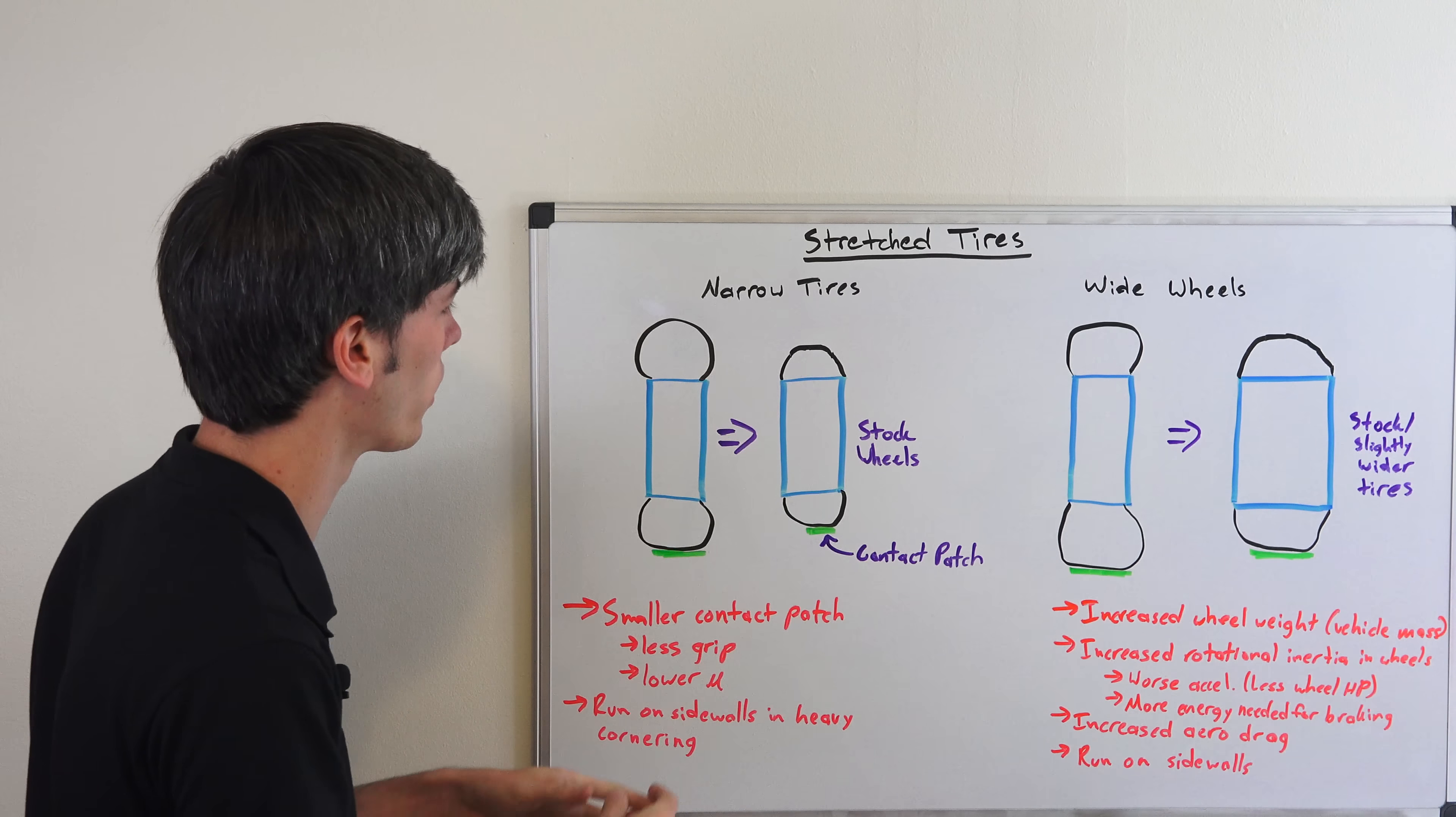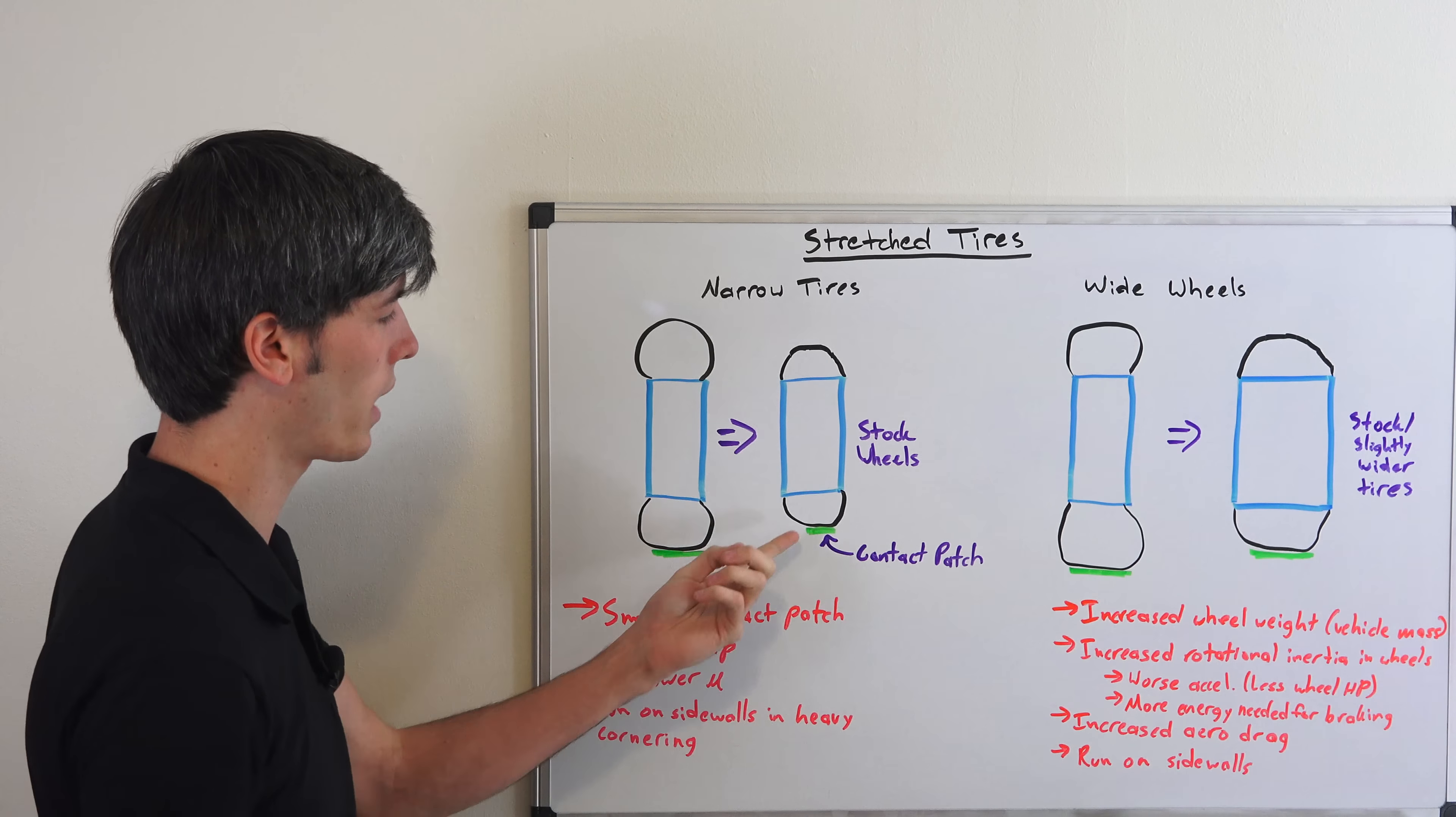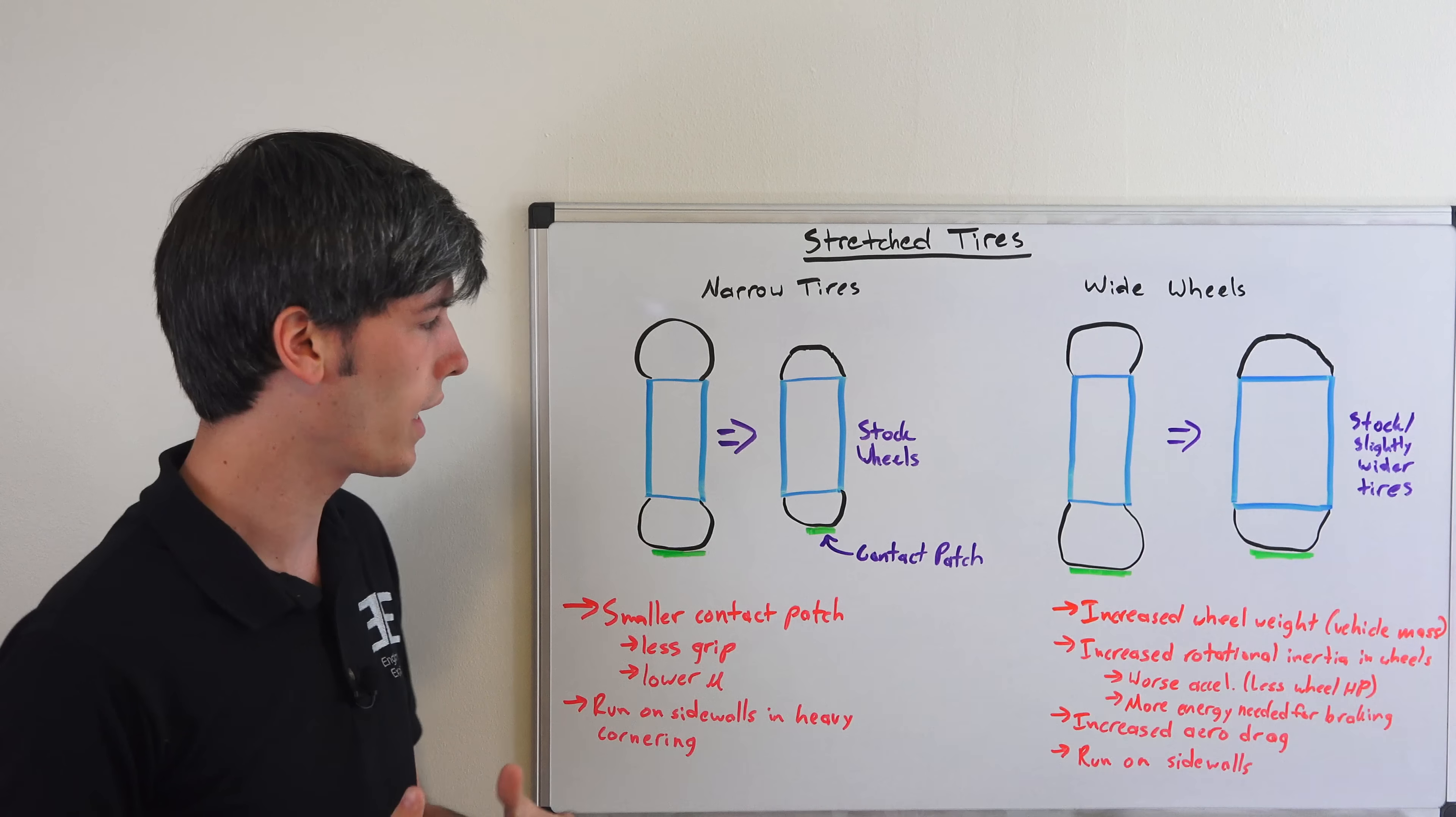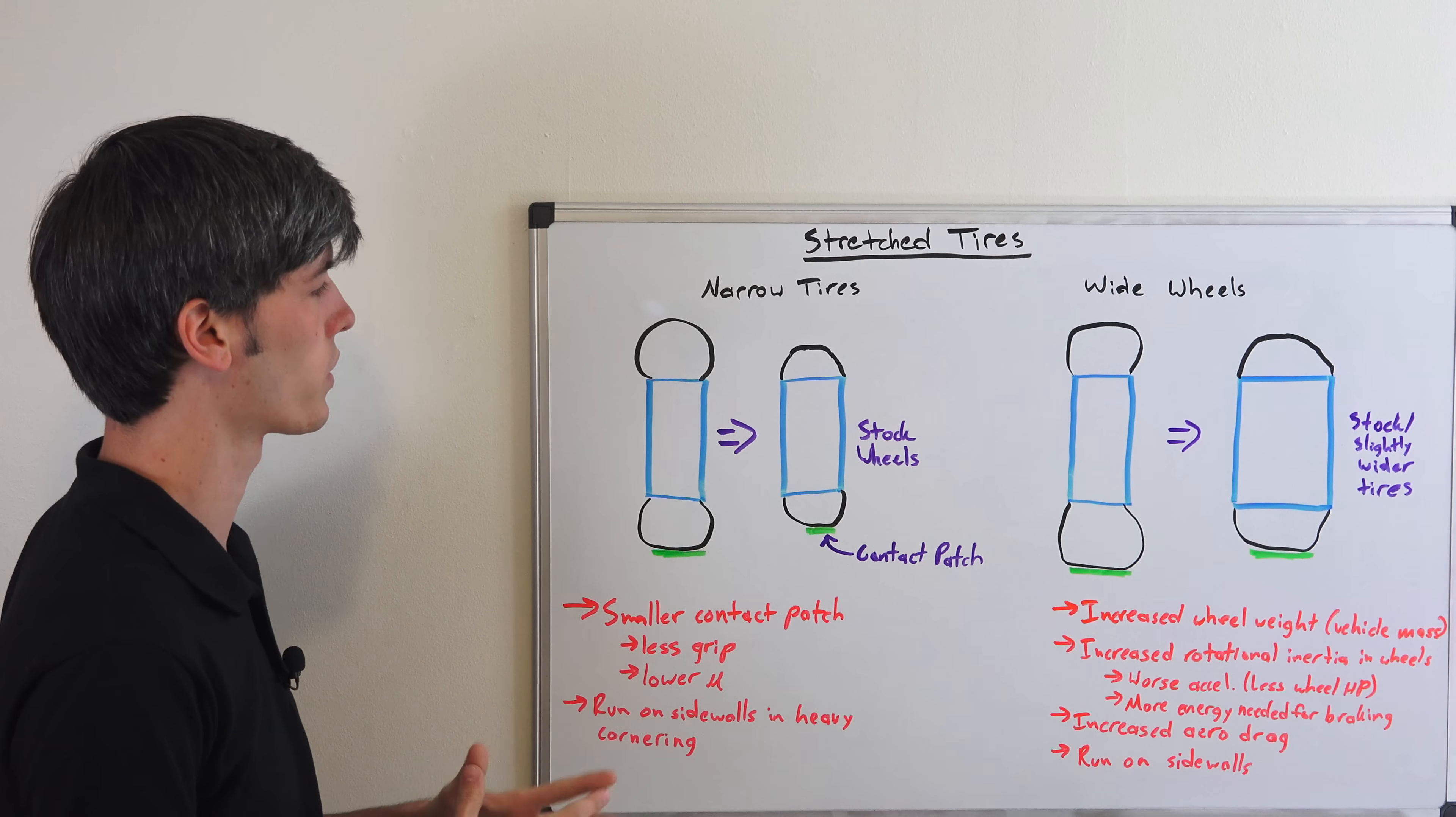And so the drawbacks of doing a narrower tire on the same size wheel. Well, you're going to be decreasing your contact patch beneath the tire, what your car is sitting on. That's where it gets all its grip from, so you're going to have less grip. And also if you've watched my video on tire load sensitivity, you know that as you increase the load, the pressure on a smaller area like that, you're going to be decreasing the coefficient of friction, so you're going to be losing some grip.